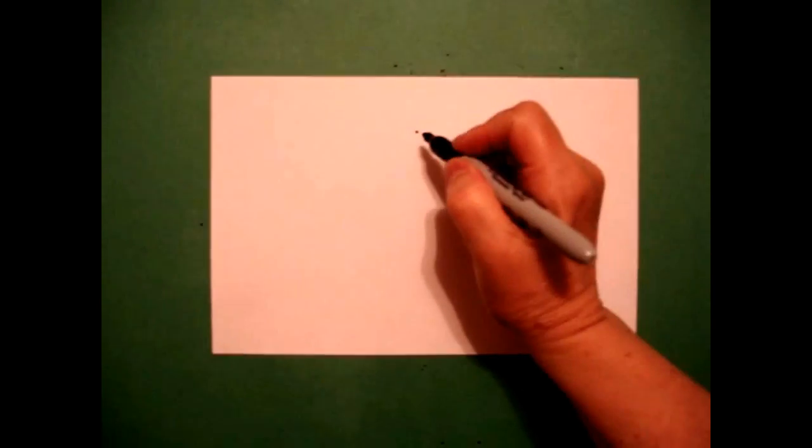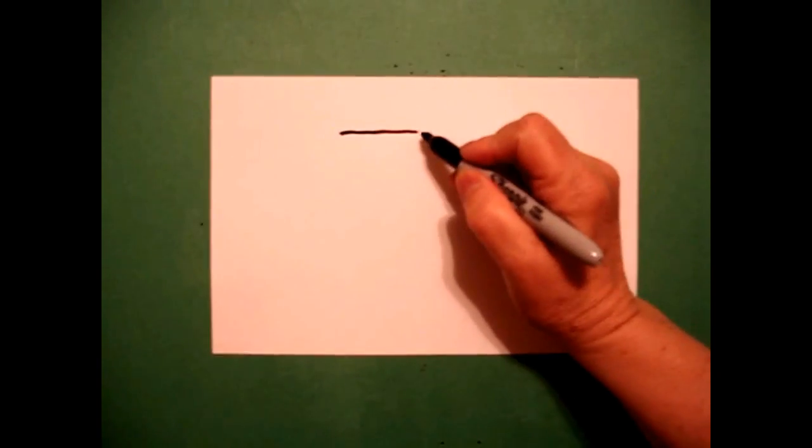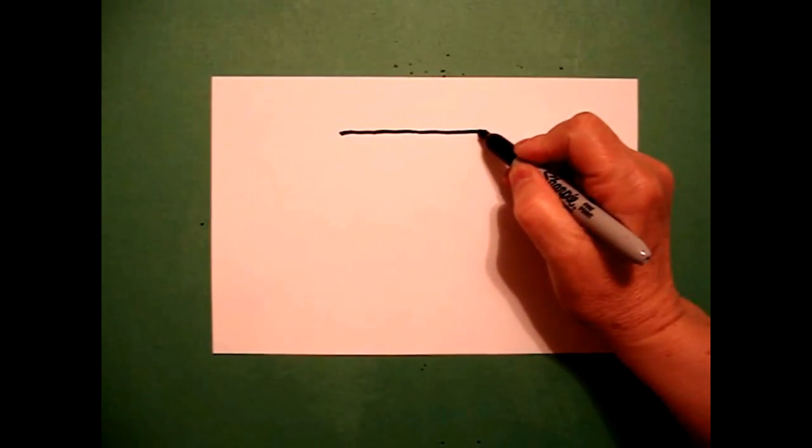Today's project is how to draw a Viking ship. I take two fingers in the center and put a dot. From that dot, I draw a straight line to the left, go back to the dot, and draw a straight line to the right.